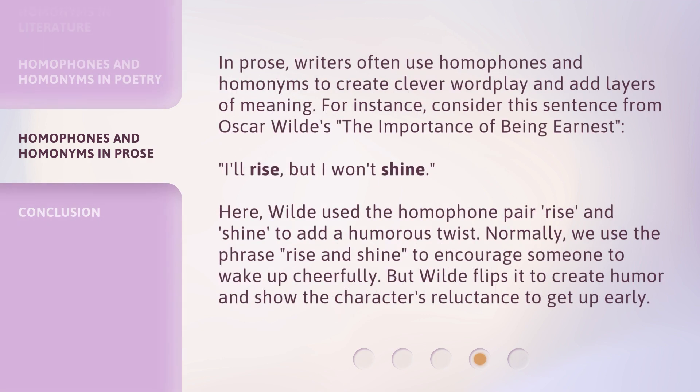In prose, writers often use homophones and homonyms to create clever wordplay and add layers of meaning. For instance, consider this sentence from Oscar Wilde's 'The Importance of Being Earnest': 'I'll rise, but I won't shine.' Here, Wilde used the homophone pair 'rise' and 'shine'.